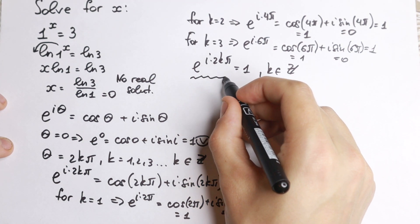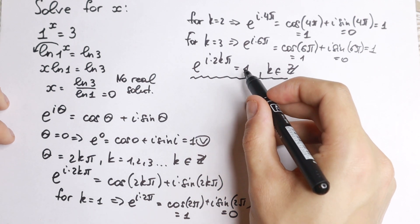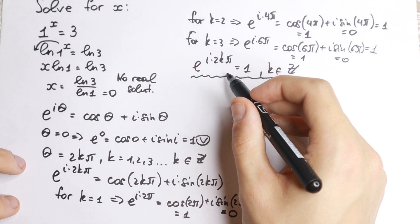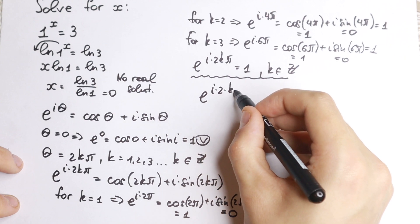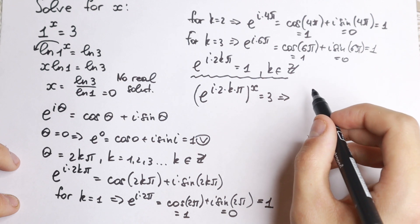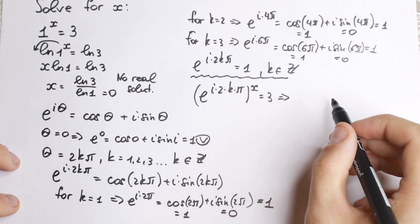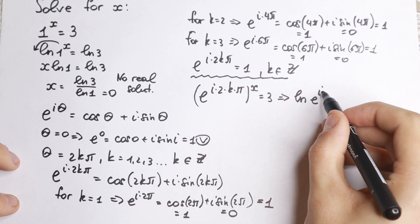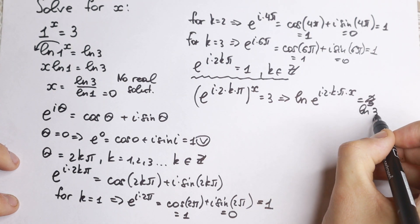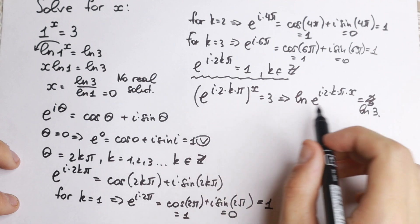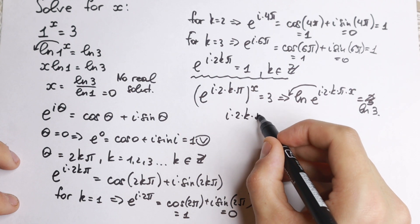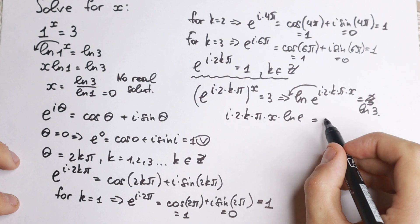This is a really good substitution, because when k is a whole number, we can write this expression instead of the 1 in our original equation. So we replace 1 with e to the power i times 2k pi and raise it to the power x: e to the power i times 2k pi times x equals 3. Now let's take natural log on both sides. We get natural log of e to the power i times 2k pi times x equal to natural log 3. This gives us i times 2k pi times x times natural log e equal to natural log 3.